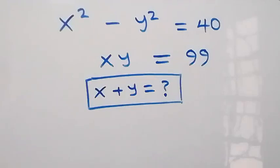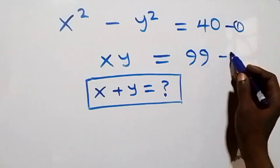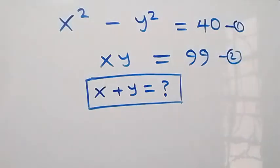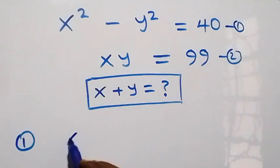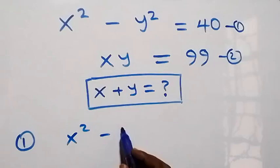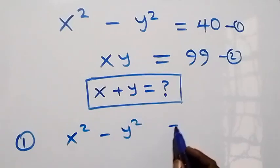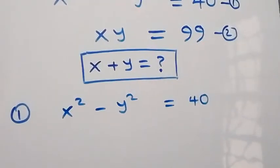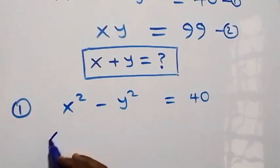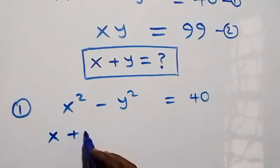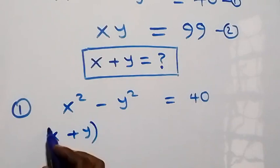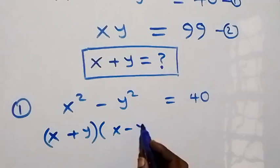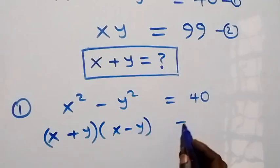Hello, you are welcome. How to solve for x plus y in this system of equations. Let this be equation one and this will be equation two. From equation one we have x squared minus y squared equals 40, and when we apply the difference of two squares this is the same as (x plus y)(x minus y) equals 40.